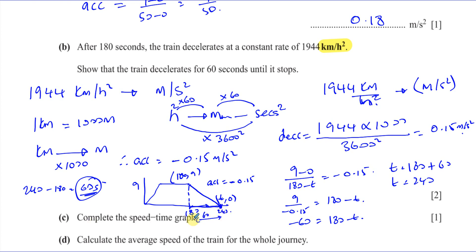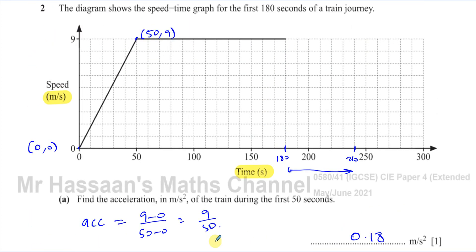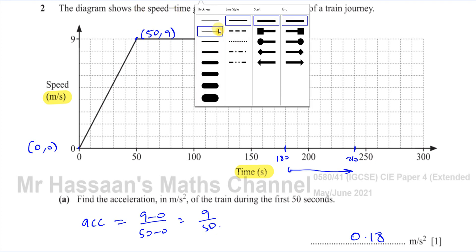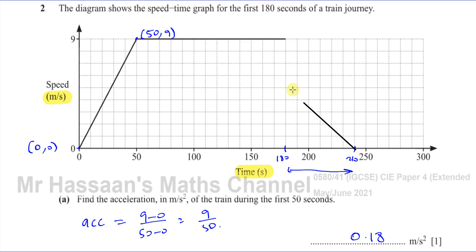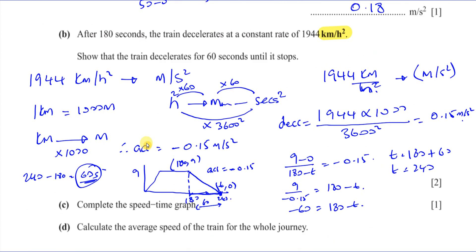Then it says complete the speed-time graph. We just draw a line from the point at 180 seconds (speed = 9) down to the point at 240 seconds (speed = 0). That's completing the speed-time graph — that's part B of the question.